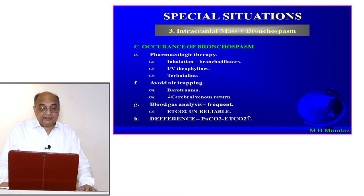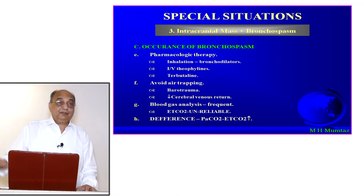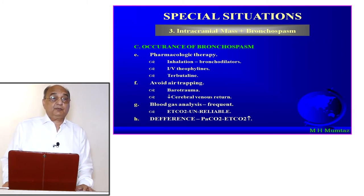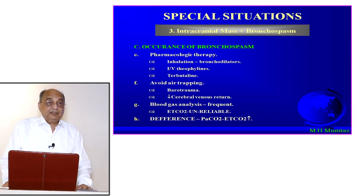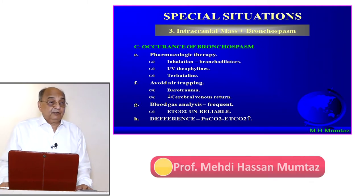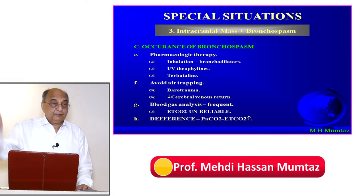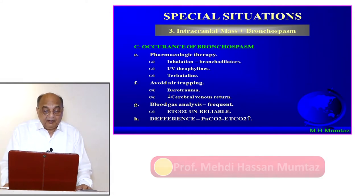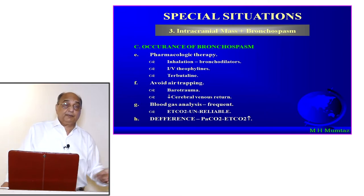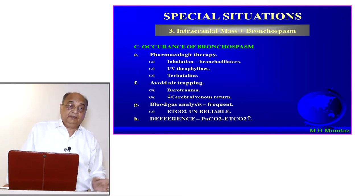Also monitor that bronchospasm and increased intrathoracic pressure are not hindering venous return from the brain — adjust the patient's position accordingly. Perform frequent blood gas analysis once a patient goes into bronchospasm, even if it is relieved, because neurosurgical operations can last 4, 6, 8, even up to 18 hours. Frequent blood gases allow you to modify management.